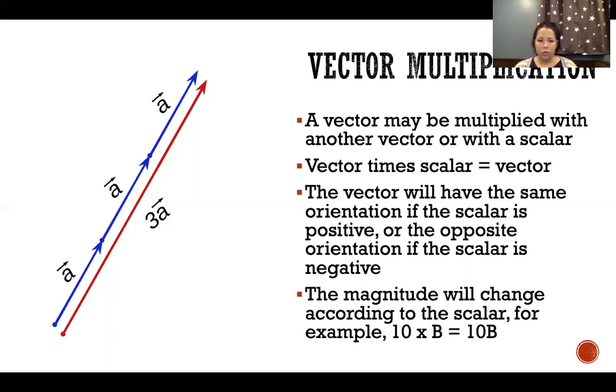The magnitude or the length of the vector will change according to the scalar. In our picture here, each little blue line is vector a. If we multiply that by a scalar of 3, the result is 3a, and that's that red line